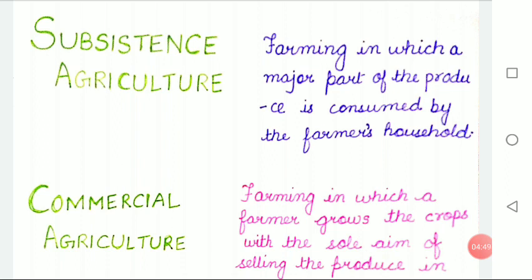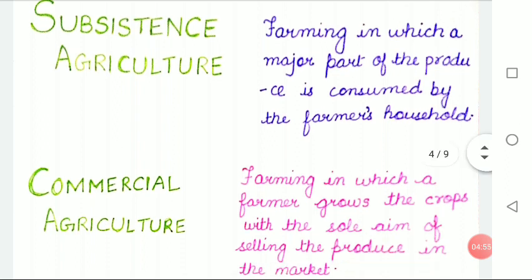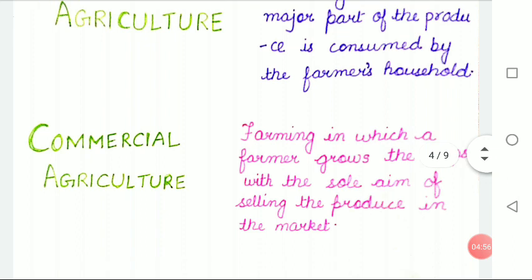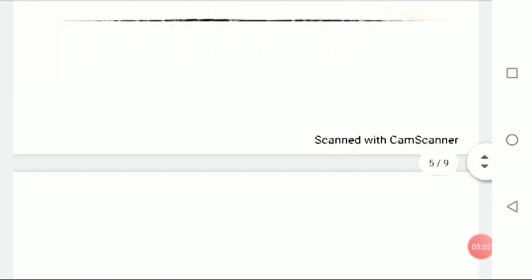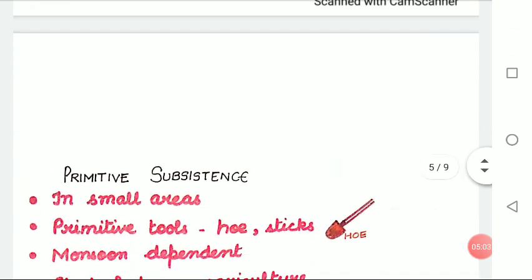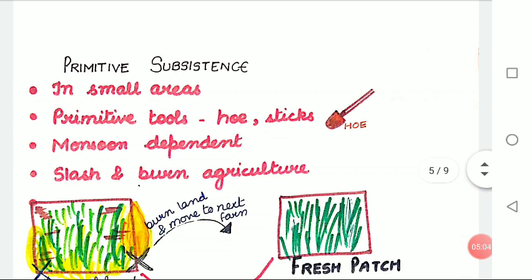The produce is meant for the family; they don't produce for selling in the market. Commercial agriculture is farming in which a farmer grows crops with the sole aim of selling the produce in the market.